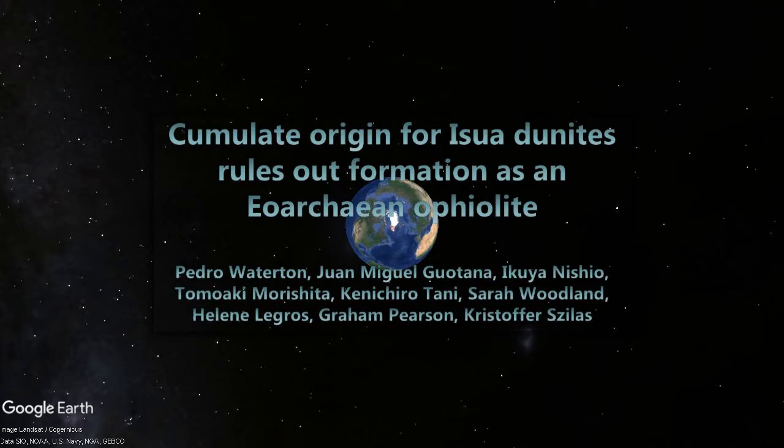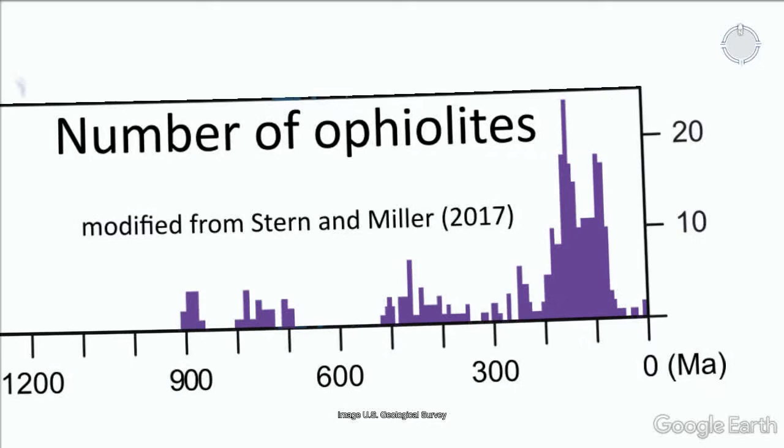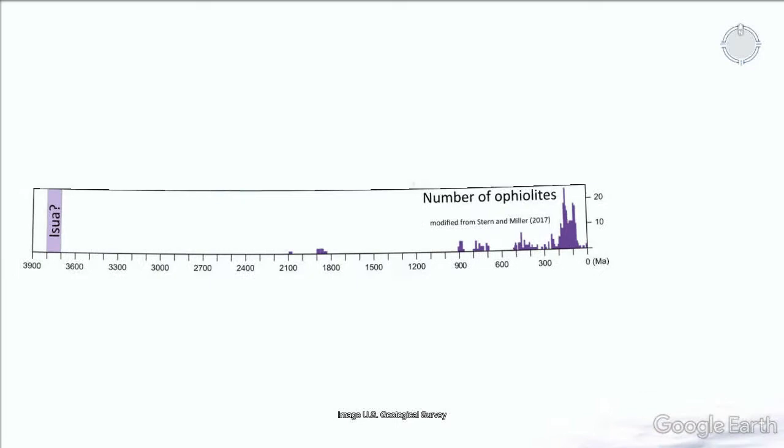I'm going to start with a histogram of ophiolite occurrences through geological time, modified from Stern and Miller 2017. As you can see, there are a lot of ophiolites forming in the Phanerozoic and a fair few going back to the Neoproterozoic. But as you go back through geological time the number decreases. Stern and Miller have that there are absolutely no ophiolites forming in the Mesoproterozoic whatsoever.